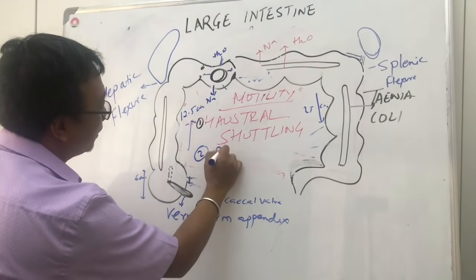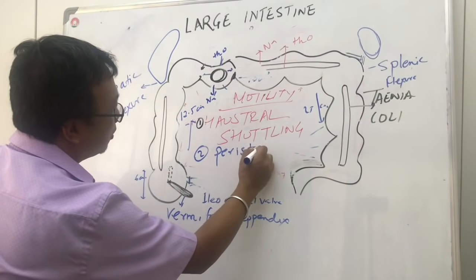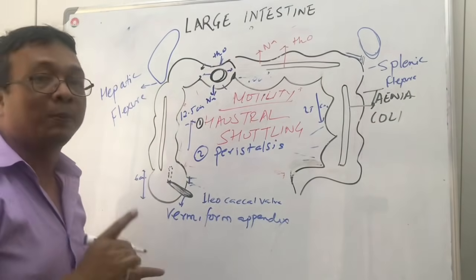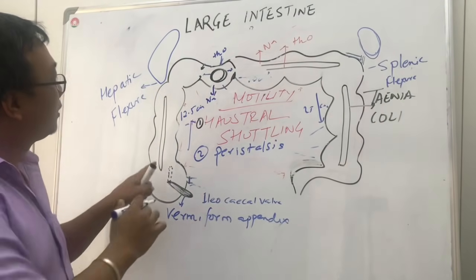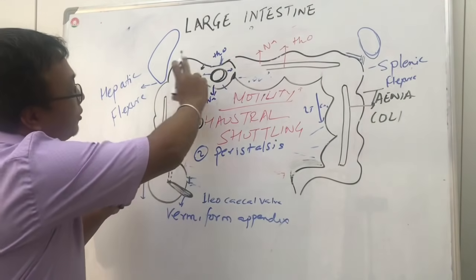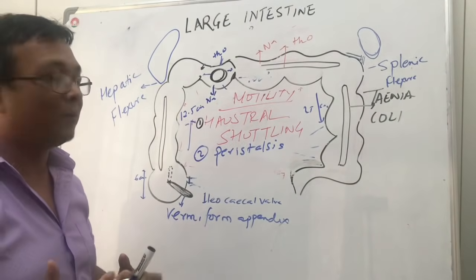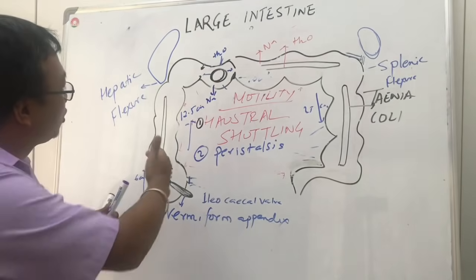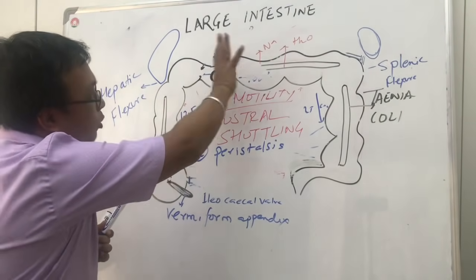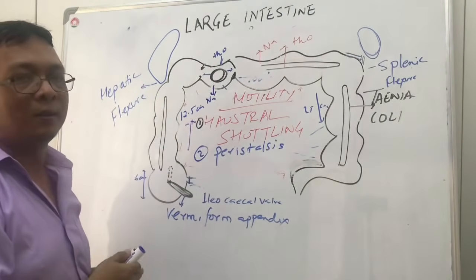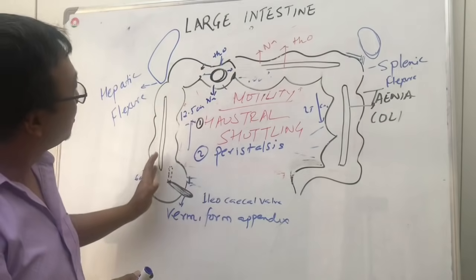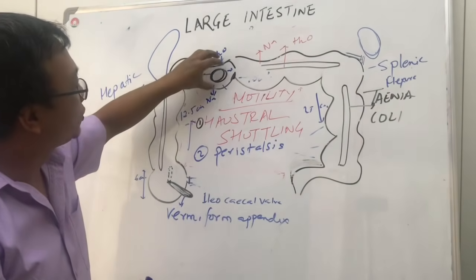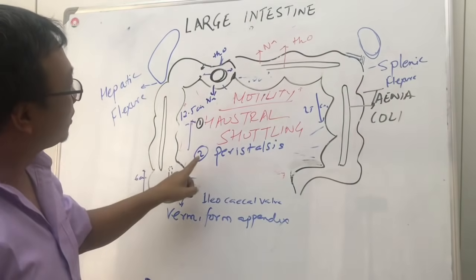The second type of motility is peristalsis, which occurs throughout the GI tract due to the myenteric plexus. The entire GI tract is innervated by the vagus nerve, which causes parasympathetic nerve impulses driving the forward motion of digested food material. There is a constant background of peristalsis over which haustral shuttling occurs.